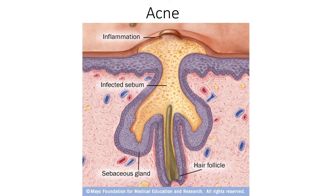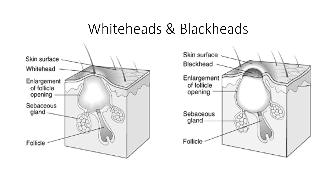Unfortunately, sebaceous glands can become inflamed with bacteria, and in that case we have acne. A whitehead occurs when skin grows over the top of the inflamed gland, trapping the sebum inside. A blackhead is an inflamed sebaceous gland where there is an opening for the sebum to escape — the black color comes from the collection of melanin in our skin, regardless of your skin tone. The difference is simply whether skin grows over the top of that inflamed gland: whiteheads have skin growing over the top, whereas blackheads do not.